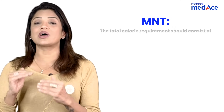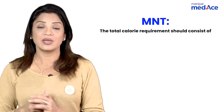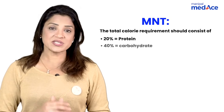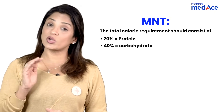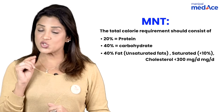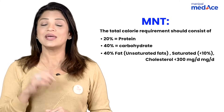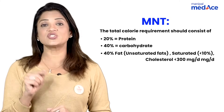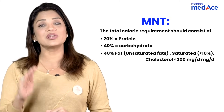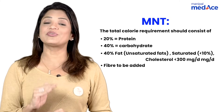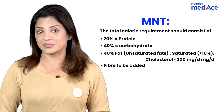In the medical nutrition therapy we advise to a patient with diabetes in pregnancy, what should be the ratio of protein, carbohydrate, and fat? It is 20% proteins, 40% carbohydrates, and 40% fats. The 40% fats should include mainly unsaturated fats; saturated fats should be less than 10%, cholesterol levels should be very low, and fiber must be added.